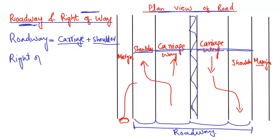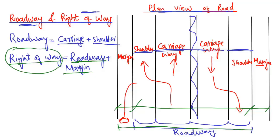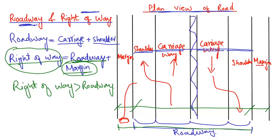The right of way is a bit more than the roadway. It is basically the combination of roadway plus margin. So right of way consists of the roadway — which includes carriageways and shoulders — plus the margin added on each side. This whole width of the road is known as the right of way. Right of way is always greater than or equal to the roadway, but can never be less, because it includes the margin.